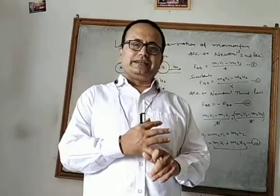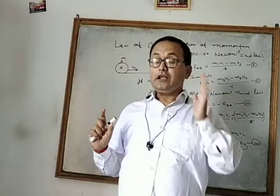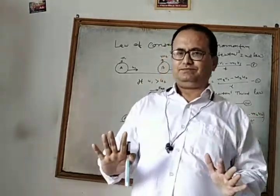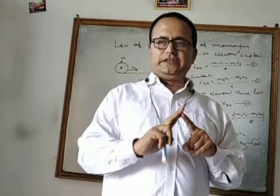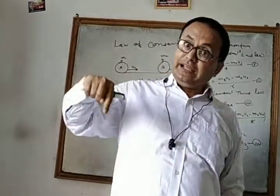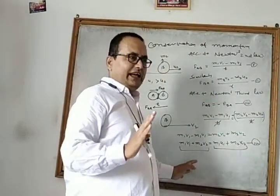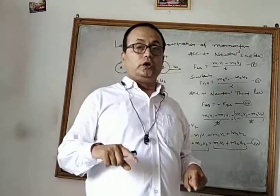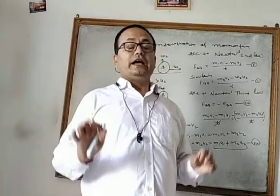From this derivation we get the law. The law of conservation of momentum states: when two objects interact with each other and move in a straight line, and collide with each other, the total momentum before collision is equal to the total momentum after collision, unless an external force acts on it.